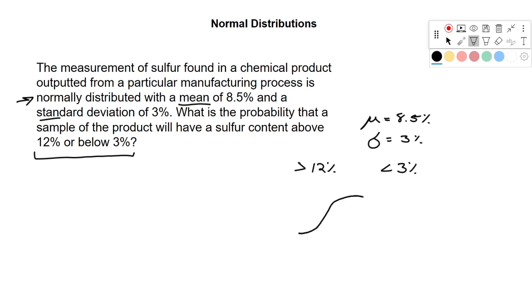So if we draw this out as a bell curve and we assume that our mean is here in the middle, 8.5, we're just going to approximate this. Let's say 12 is here, 3 is here. We're looking at these sections here, these external sections, not the range between 3 and 12.